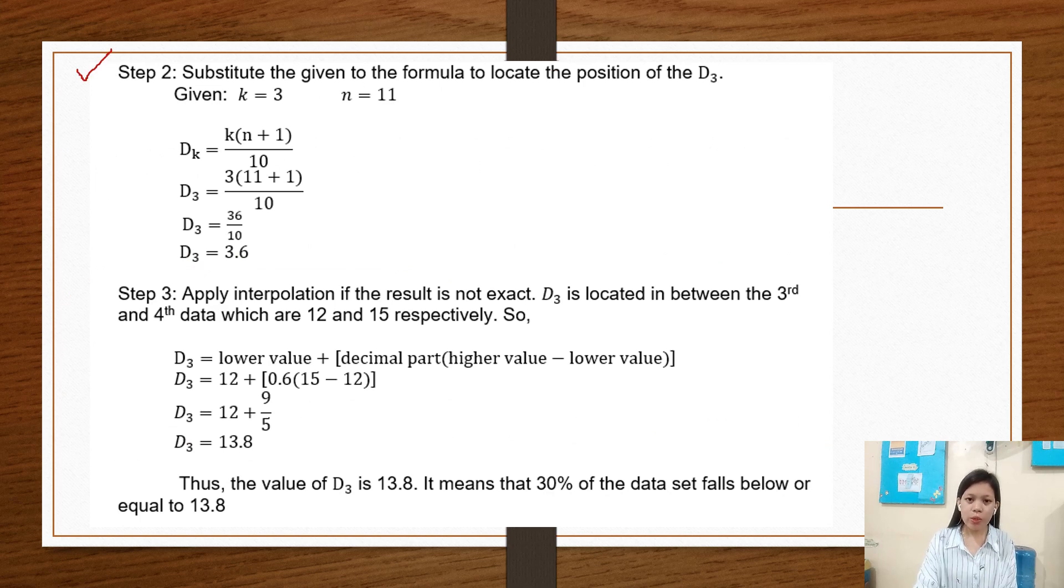Step 2: Substitute the given values into the formula to locate the position of D3. Given: K equals 3 and N equals 11. D3 equals 3 times 11 plus 1 over 10, which equals 36 over 10, equals 3.6.